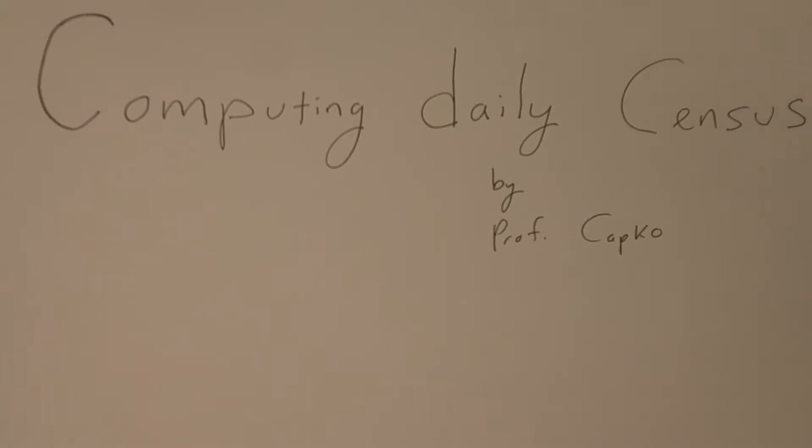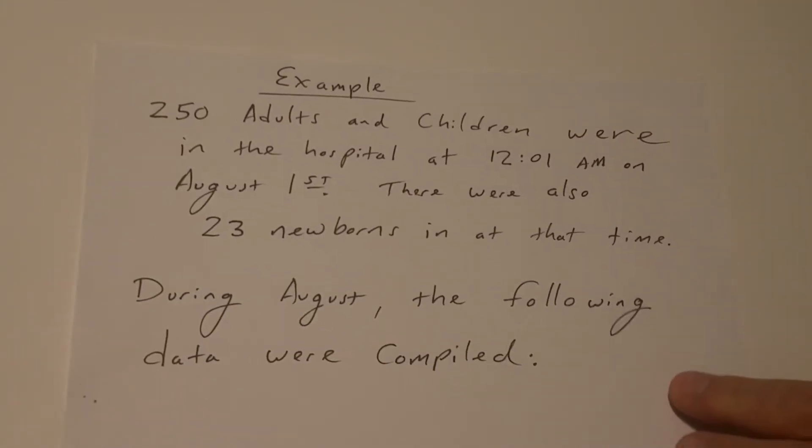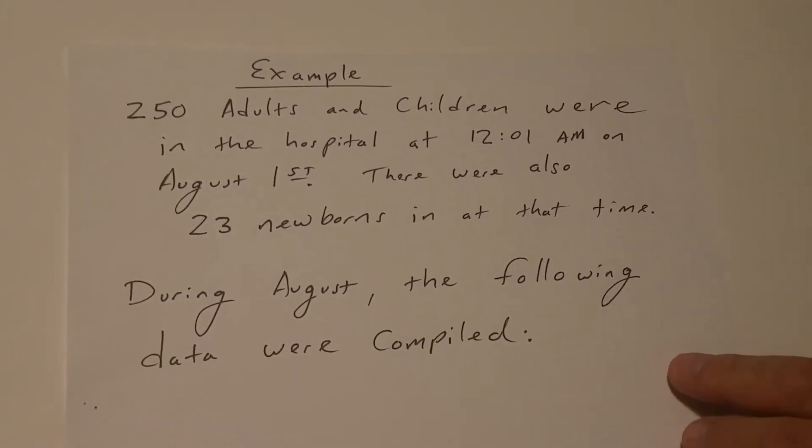Alright, so let's look at an example. You might be given an example or a problem like this. There are 250 adults and children that are in the hospital at 12:01 AM on August 1st.